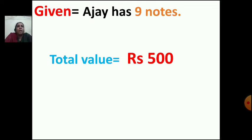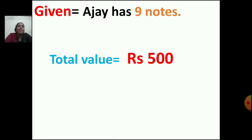So we have to see which 9 notes Ajay will take to make rupees 500. You can take 100 rupees, you can take 50 rupees, you can take 20 rupees. But the number of notes should be 9 and the total of those 9 notes should come to rupees 500 only.